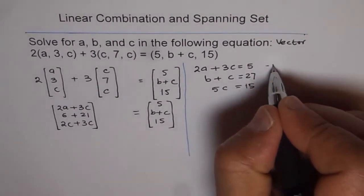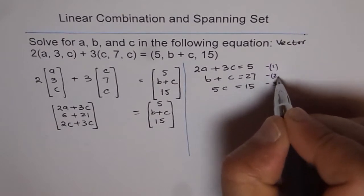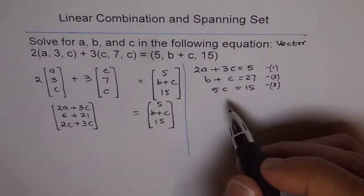Let me number them as 1, 2 and 3. These are my three equations and we need to find what a, b, c, the three unknown quantities are.